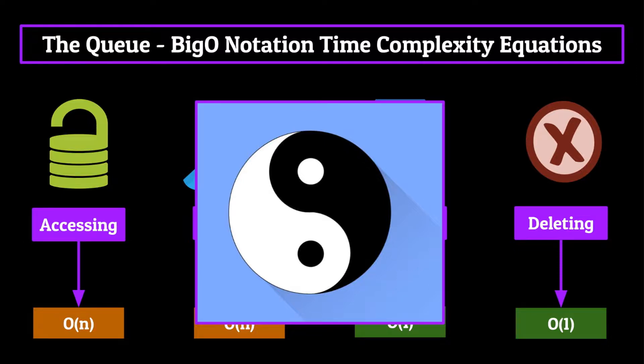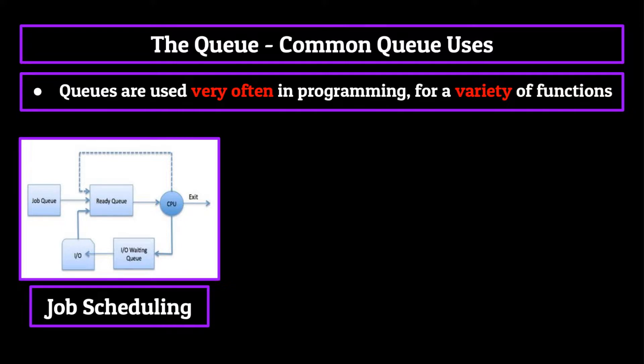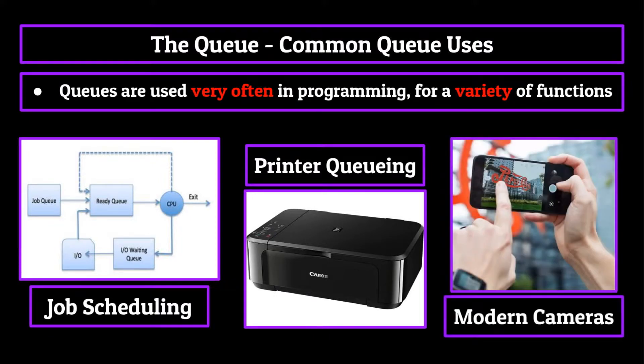Alright, now the final thing I want to cover is just some common uses for a queue within programming. What are these things actually used for? And the answer is, quite honestly, a lot. Queues are used for what's known as job scheduling, in which the computer determines which tasks to complete for the user and when, like opening up a webpage or a computer program. It's also used in printers to keep track of when multiple users try and print to figure out whose documents get printed first. Heck, even Google uses queues in their new Pixel phones to enable what's known as zero shutter lag, in which they strategically use queues to eliminate the time between when you take a picture and what the phone actually captures. So yeah, in conclusion, the queue is pretty great and is used in much of the technology you interact with every day.